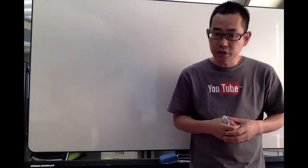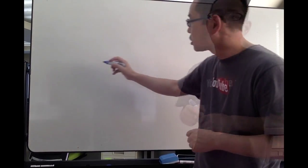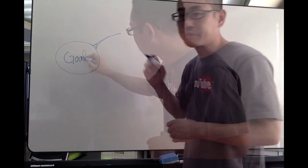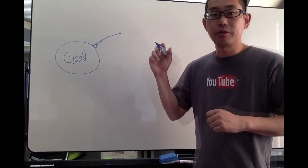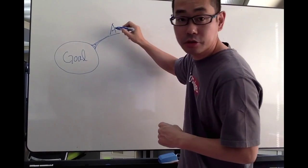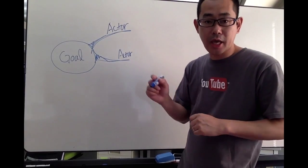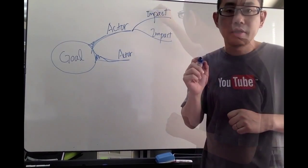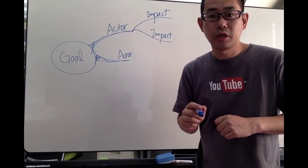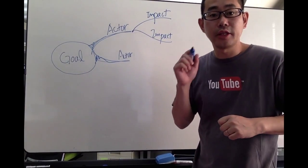Impact mapping is a way of visualizing connections among the business goal and the relevant people, called actors, the impact to their behaviors, and the features of the product, called deliverables.